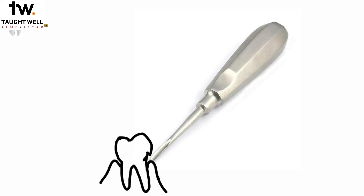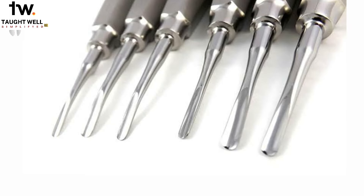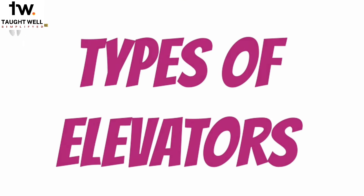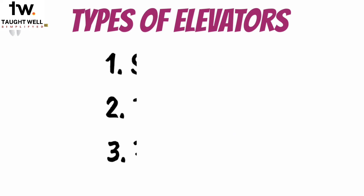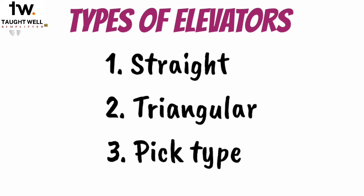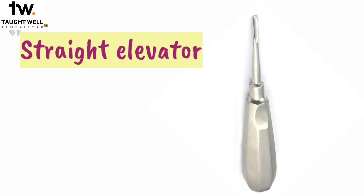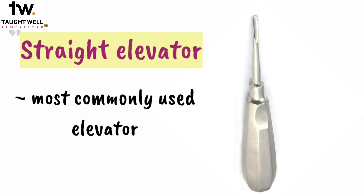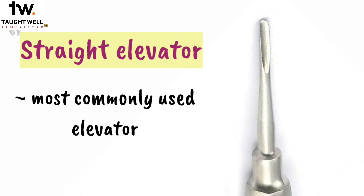The shape of the blade is different for different elevators. There are three basic types of elevators: straight, triangular, and pick type. This is the straight elevator. You can see the shape of the blade is straight. This is the most commonly used type of elevator. Now if you look closely, you can see that the blade is not just straight.